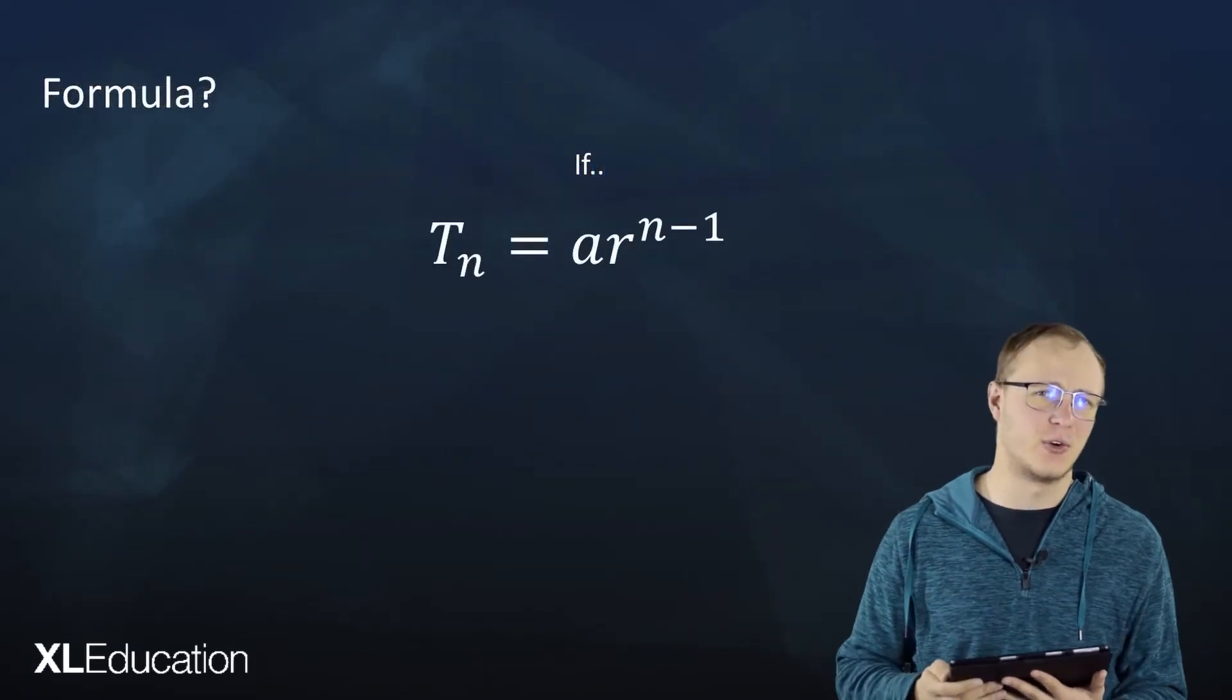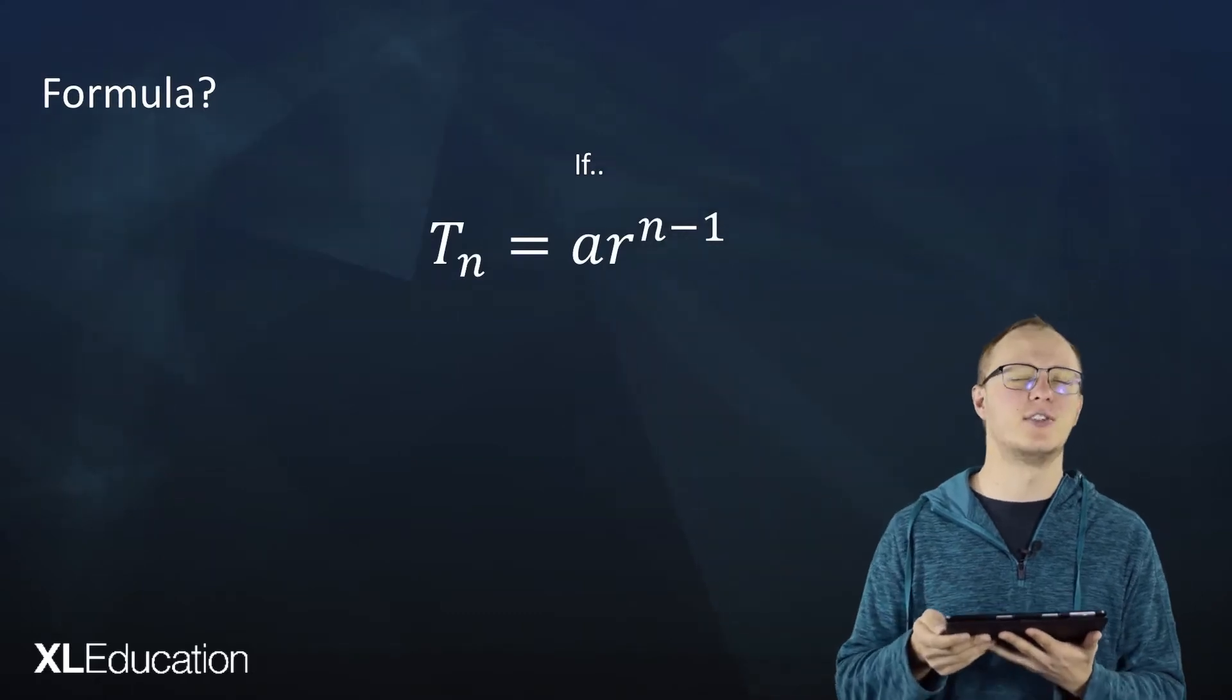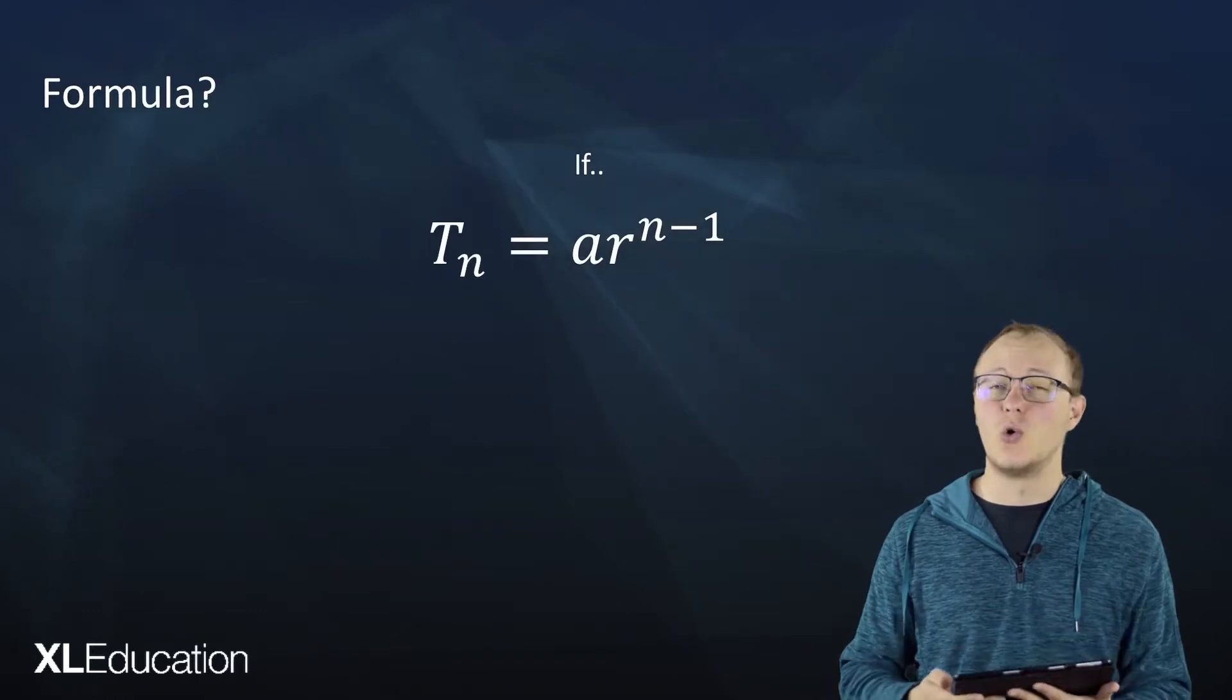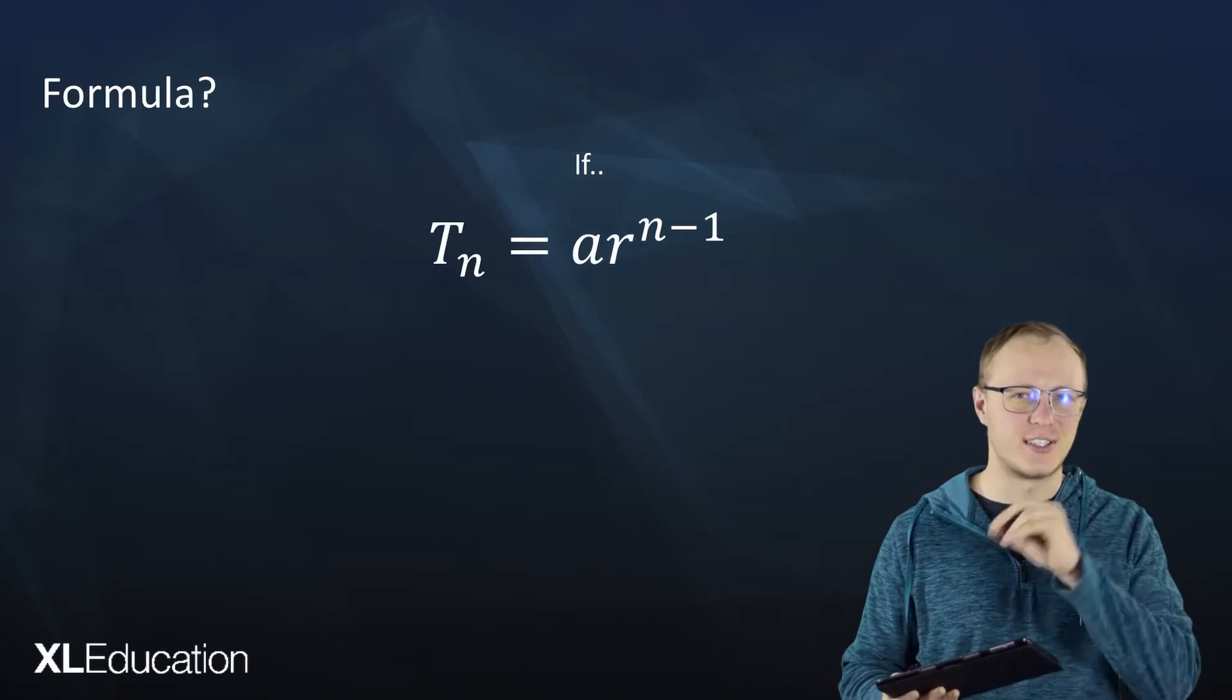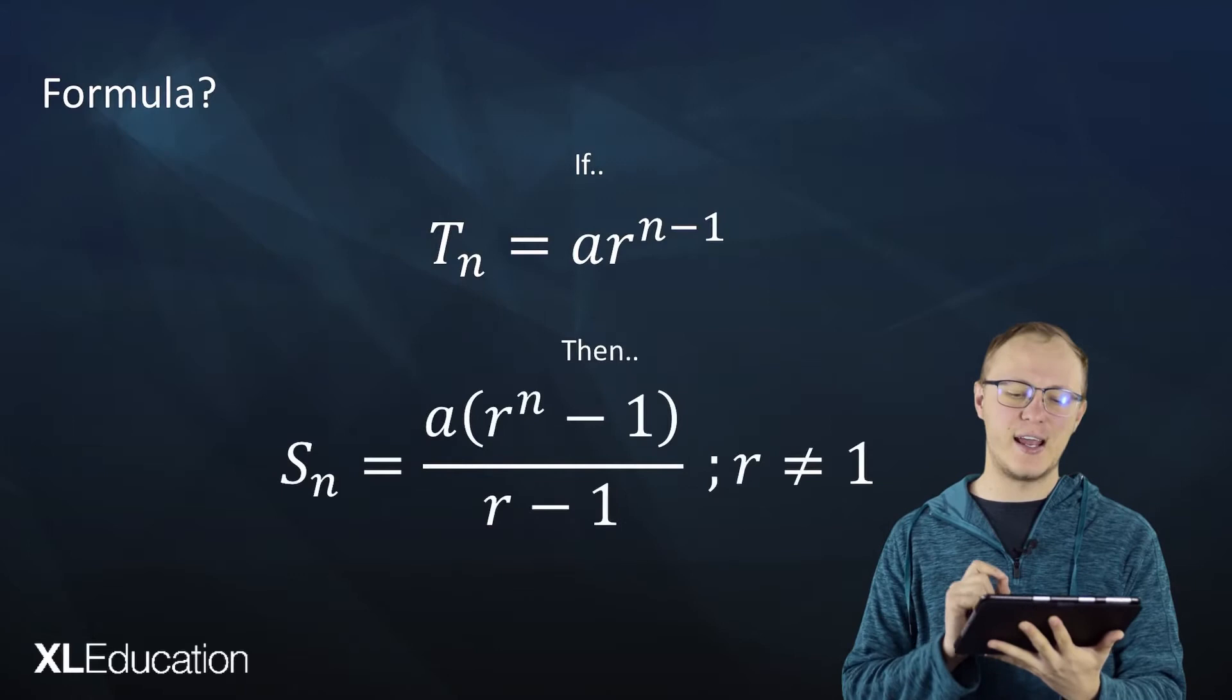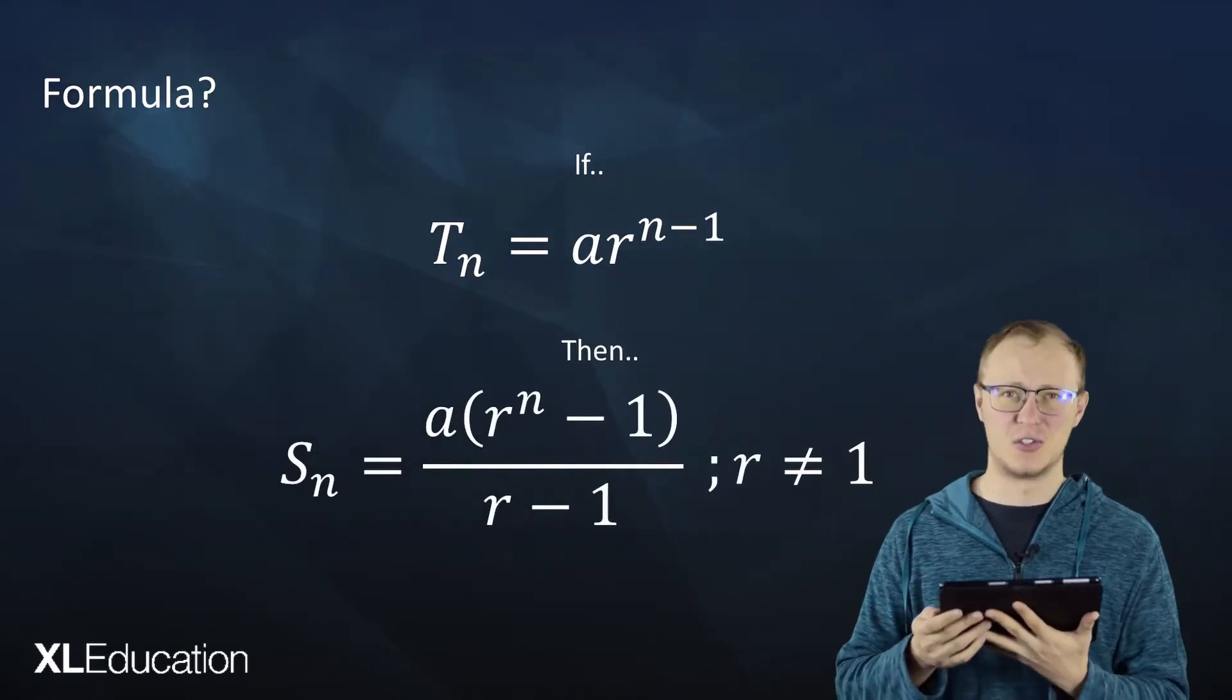Is there a formula for it? Well, if Tn equals ar to the n minus 1 is the function that you use to generate or calculate each term of the sequence, then for the series, Sn equals a(r^n - 1) divided by r minus 1.